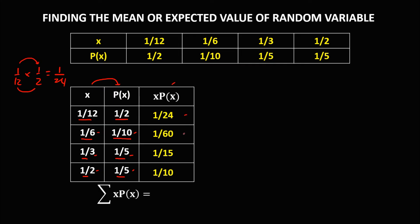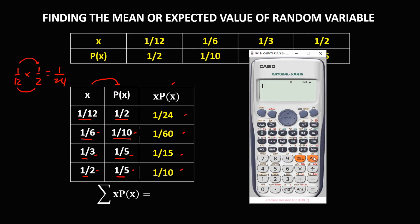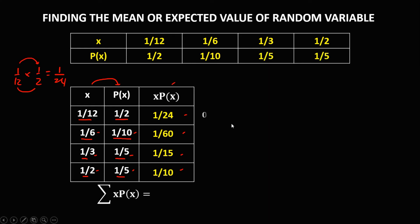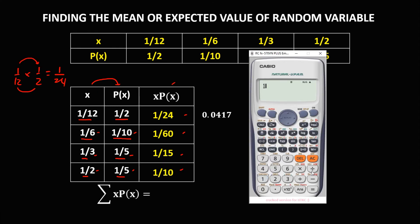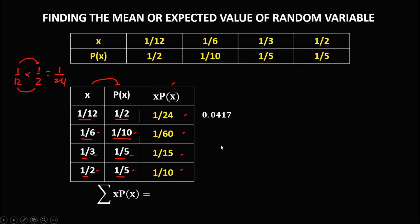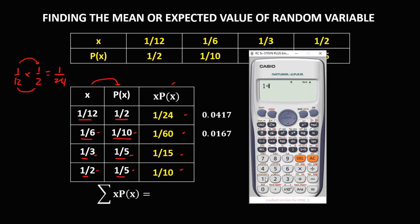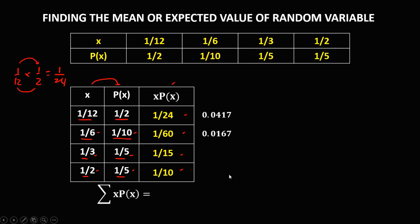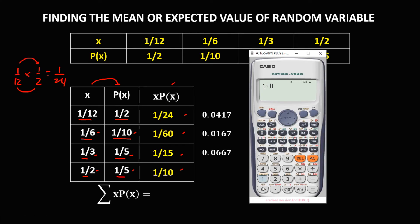Then to find the summation of x times p(x), we need to convert these to decimals first. So 1/24 divided gives 0.0417. And 1/60 gives 0.0167. And 1/15 gives 0.0667. And the last one, 1/10, gives 0.1.